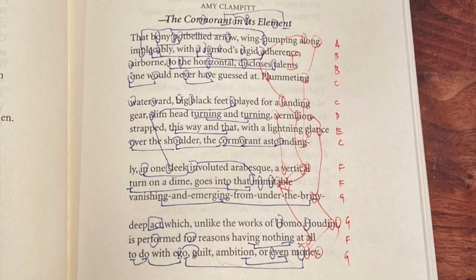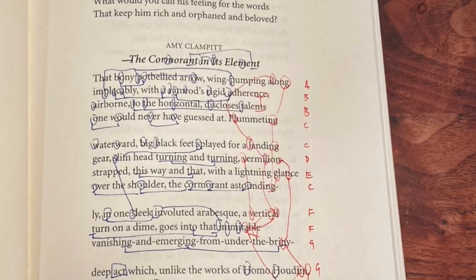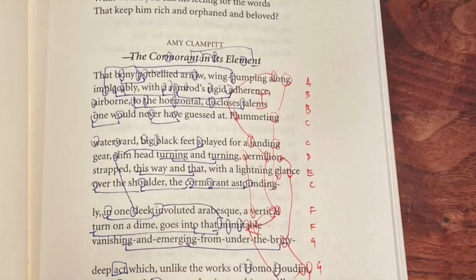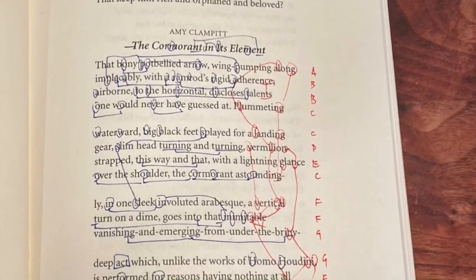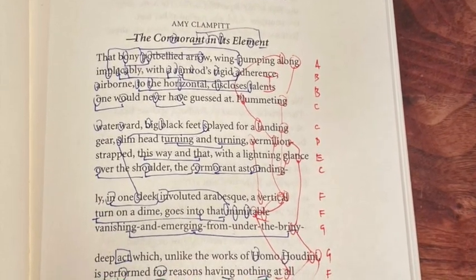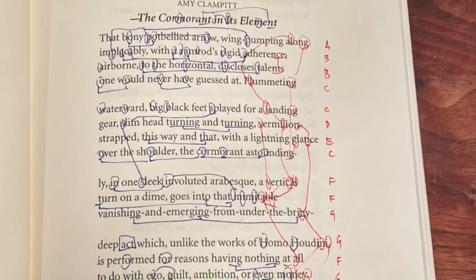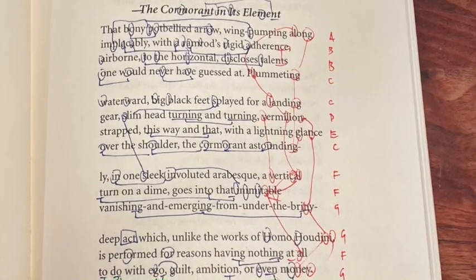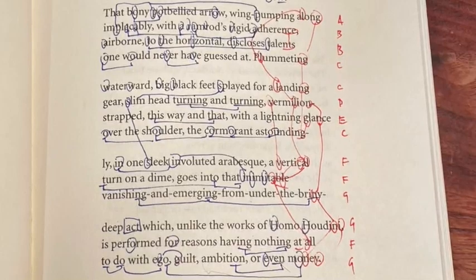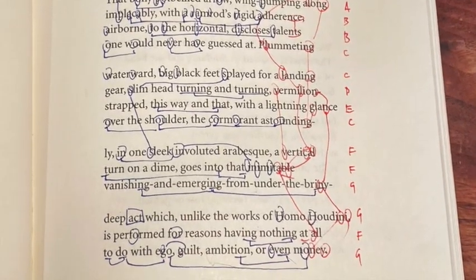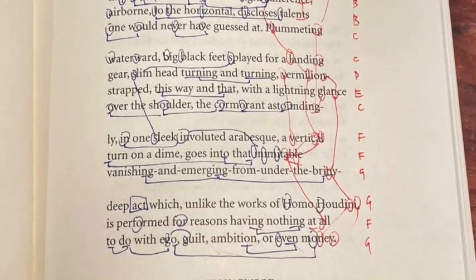And then 'money' at the bottom of the poem. There are, of course, other structures that I started to find — the repetition of the L sound in 'along,' 'plummeting,' 'landing,' 'vermilion,' 'vertical,' 'inimitable,' and 'all' in line 13.